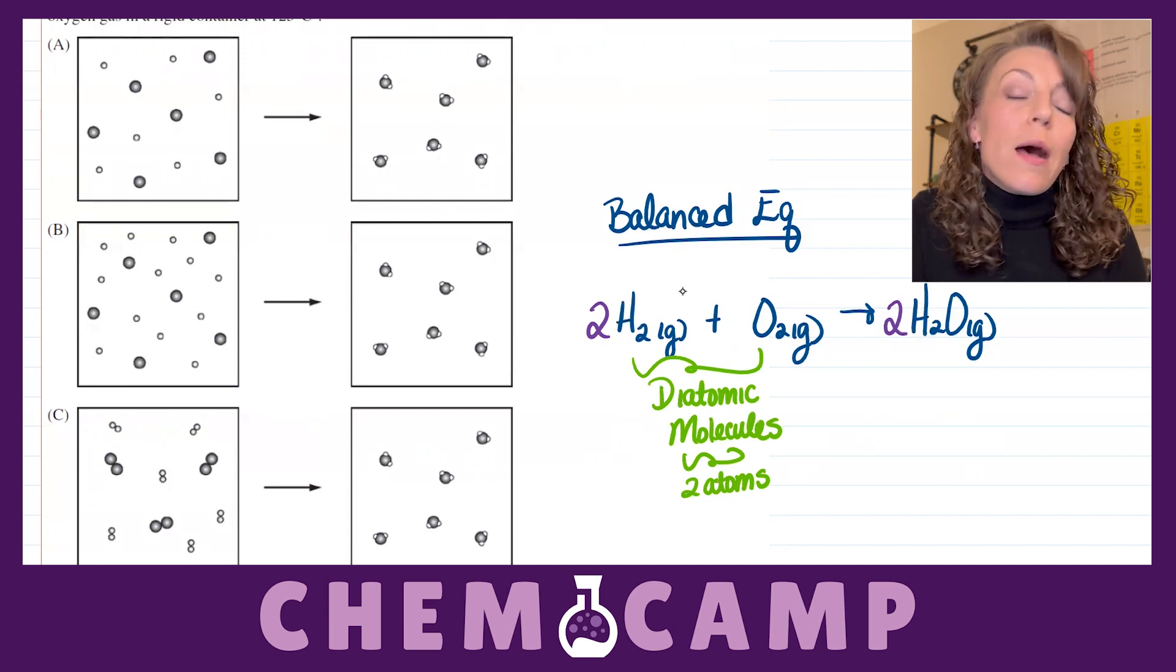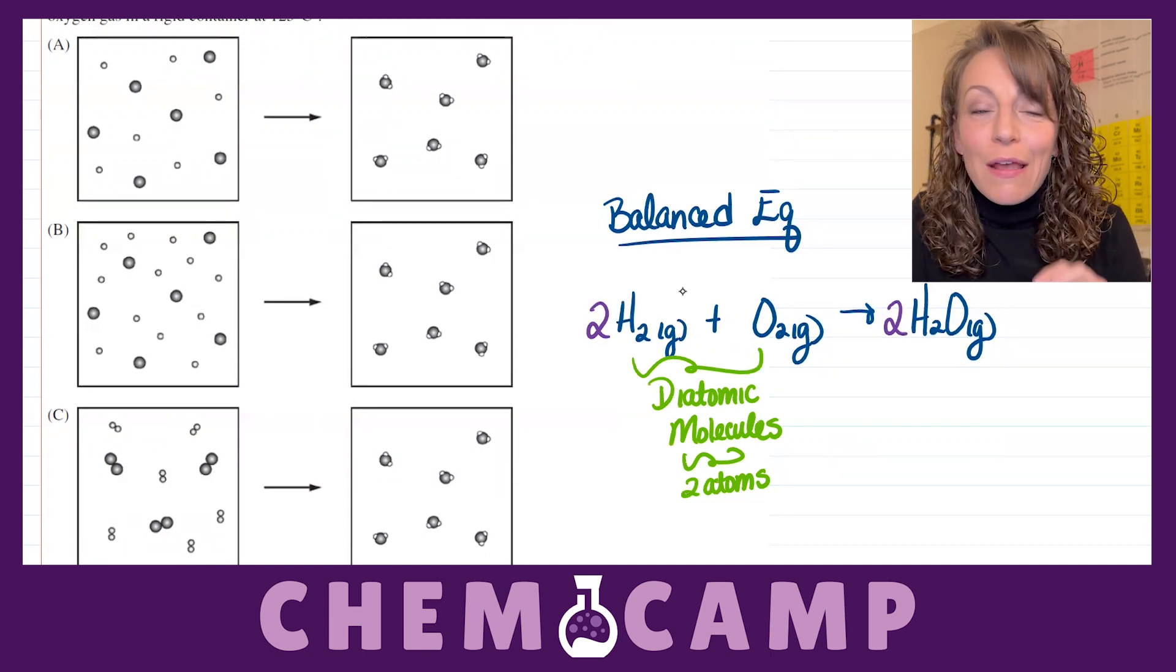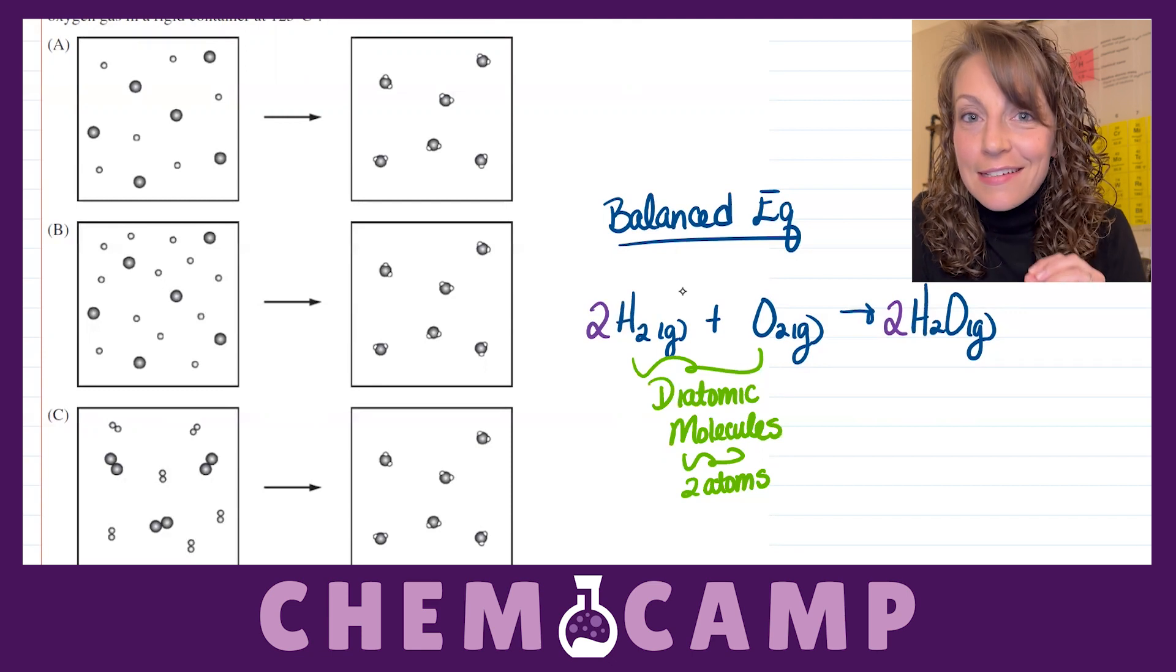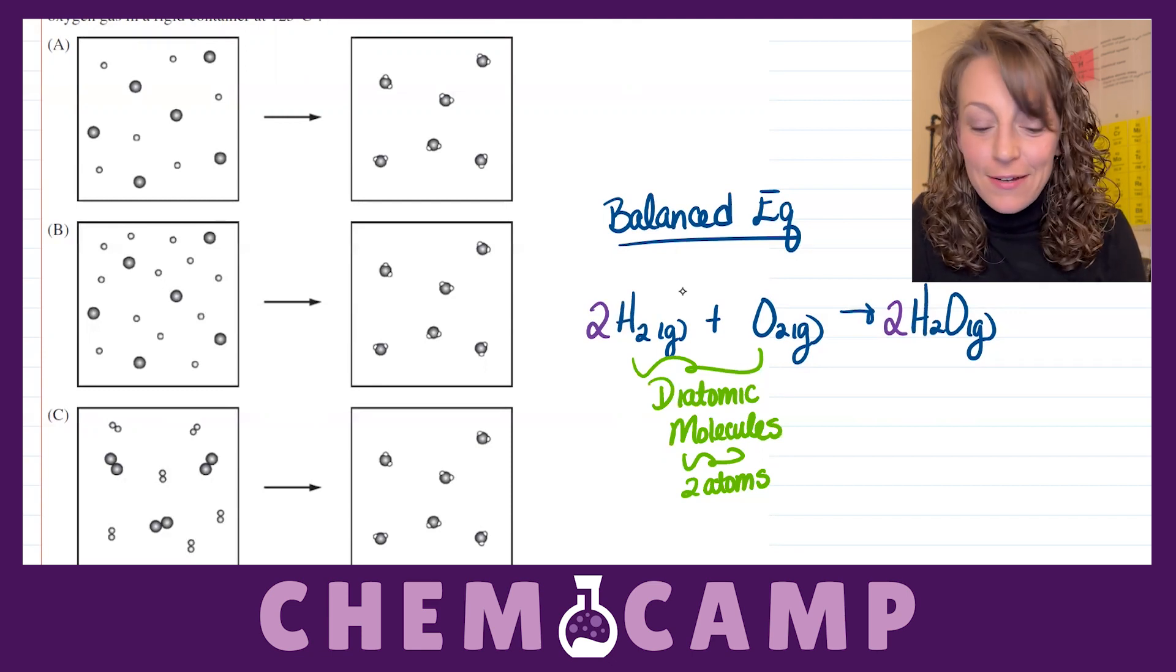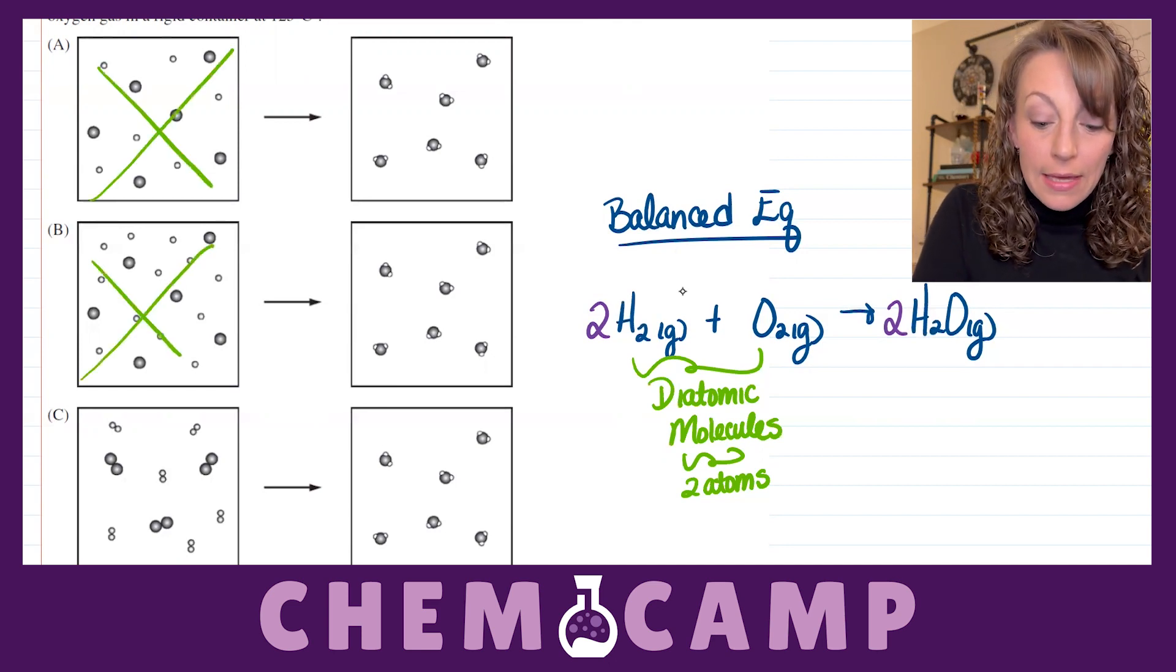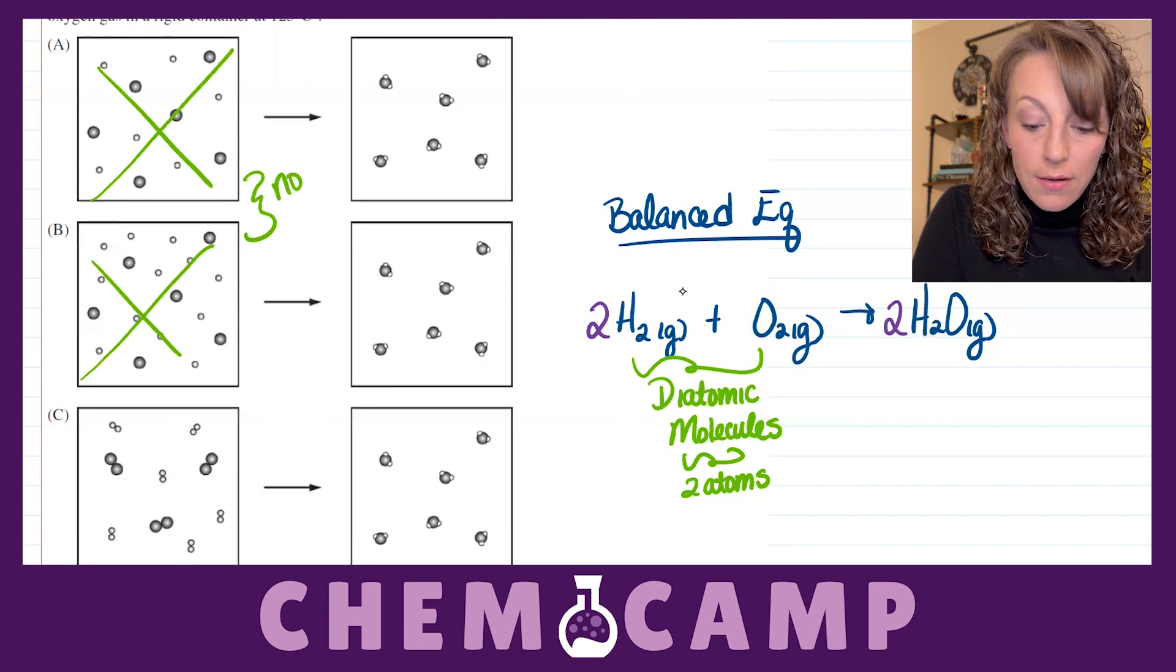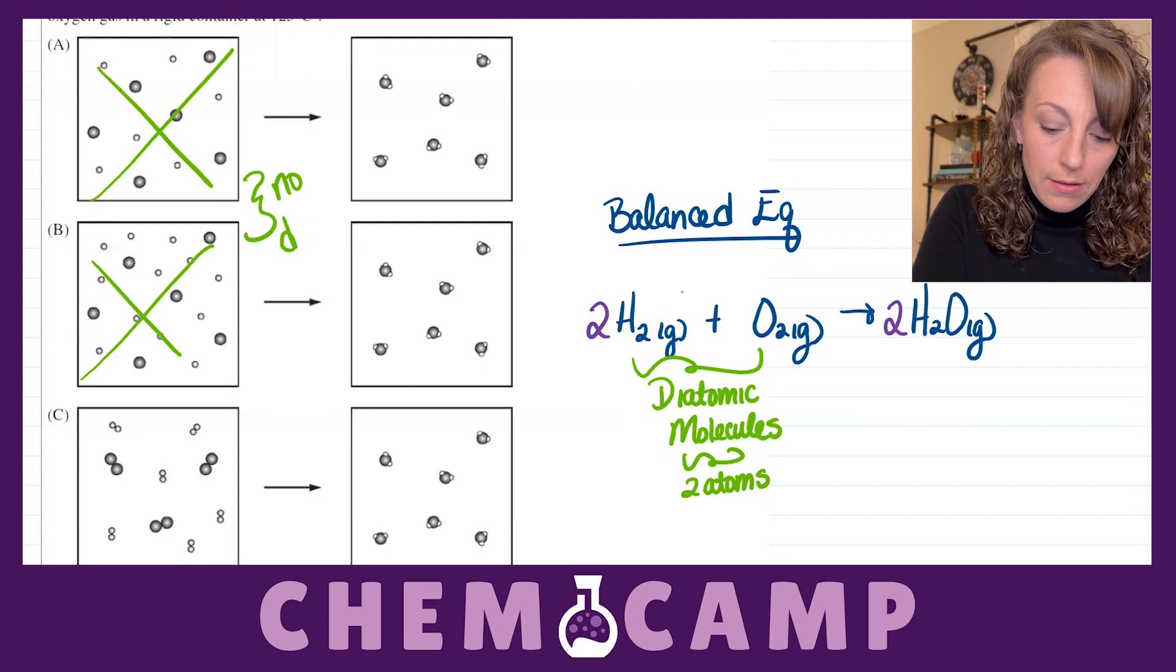So if you take a look at options A and B here, on the reactant side, they only have single atoms drawn in that reaction container. So we can go ahead and rule out A and B because there's no diatomics drawn there.